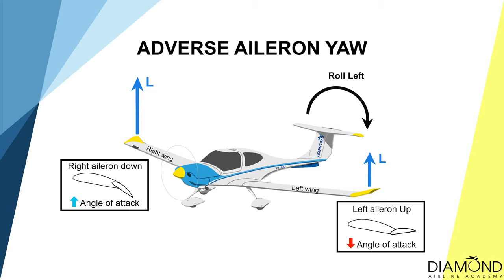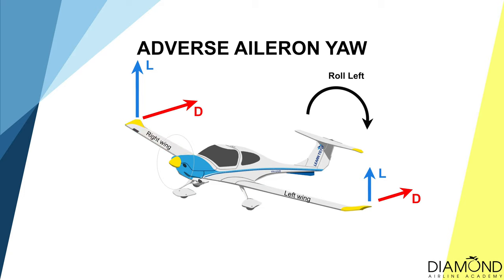When less lift is produced on the left wing, the drag on that wing is less as well. On the right wing, when lift increases, drag increases too. When the right wing has more lift than the left, the aircraft naturally rolls to the left — which is what we wanted. At the same time, the right wing creates more drag than the left, causing the aircraft to yaw to the right — which is not what we wanted. This is the adverse aileron yaw.